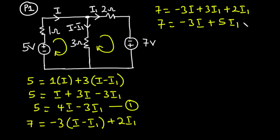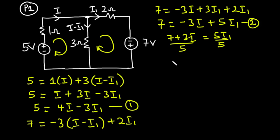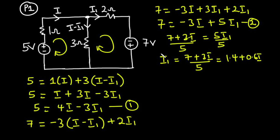From equation 2, making i1 the subject: transpose negative 3i to the left-hand side to get 7 plus 3i equals 5i1. Dividing both sides by 5 gives i1 equals (7 plus 3i) over 5, which equals 1.4 plus 0.6i. Let's call this equation 3.